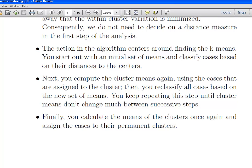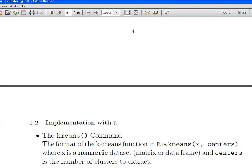Next, you compute the cluster means again, using the cases that have been assigned to the cluster. You start off with an initial guess, you have three centers, three points. You find, for each item, you decide what's the nearest center and join it to that cluster. And then, what happens is, you should have three clusters. You will compute the cluster mean again, and do the whole procedure again. You reclassify all cases based on the new set of means. You keep repeating the step until the cluster means don't change between successive steps, and no item changes membership from one cluster to another. And finally, you calculate the means of the clusters once again, and assign the cases to their permanent clusters.